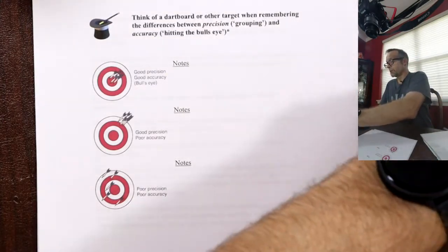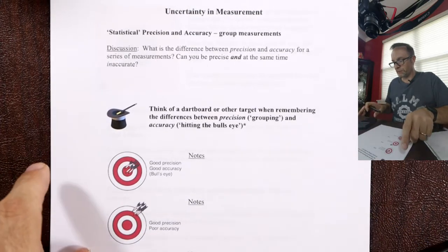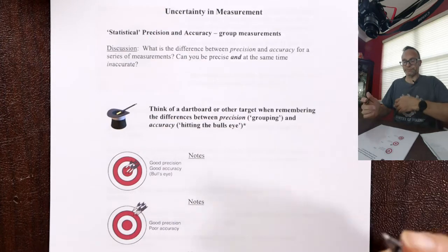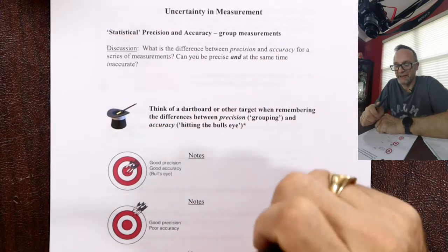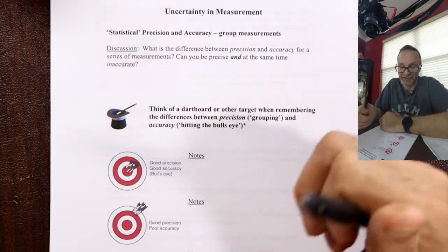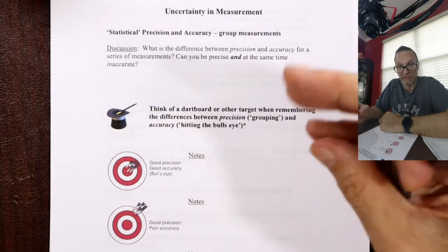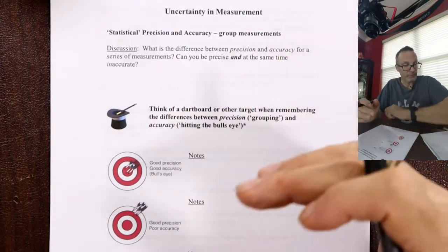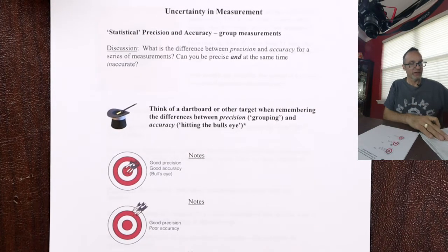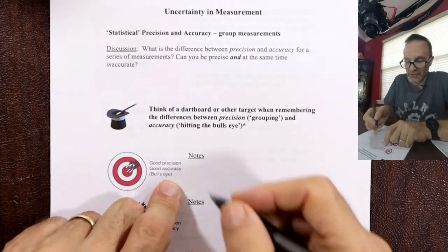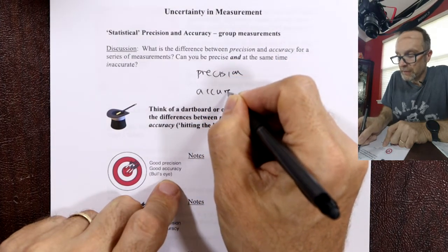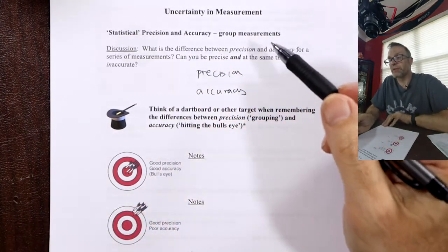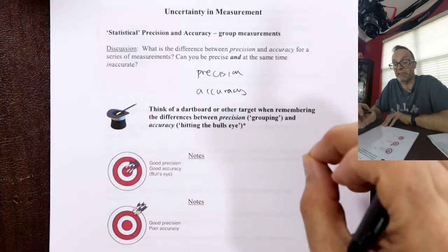We're often interested in uncertainty in our measurement — how good is our number. We can use statistics for group measurements — take an average — or quote an error limit for an individual measurement. Before we do this, we need to understand the terminology: precision and accuracy. Are they the same thing? The answer is no.